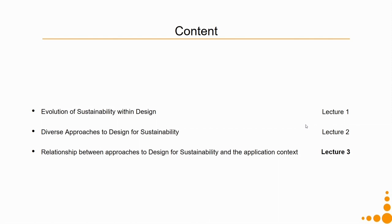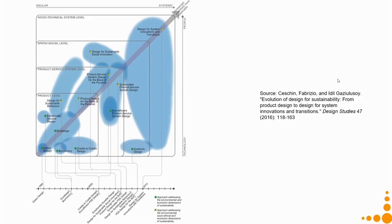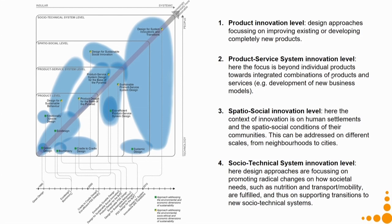We will take an example and try to see how diverse approaches can apply to a given problem context. As discussed last week, design for sustainability can be approached at four different levels: the product innovation level, where design focuses on improving or developing new products; the product-service system level, focusing on integrated combinations of products and services; the spatio-social innovation level, addressing human settlements at scales from neighbourhoods to cities; and the socio-technical innovation level, promoting radical changes in how societal needs like nutrition and mobility are fulfilled.